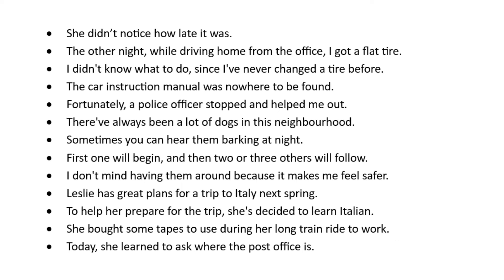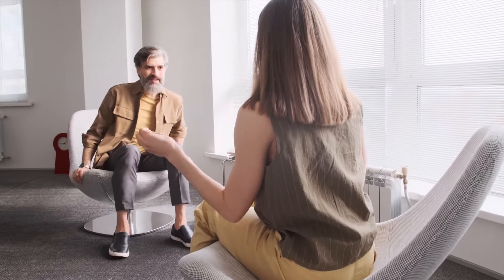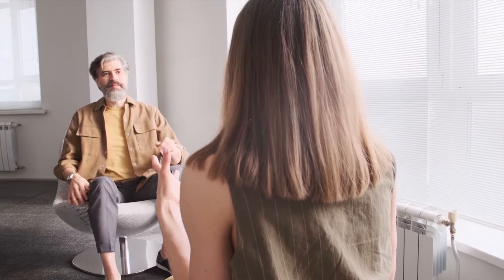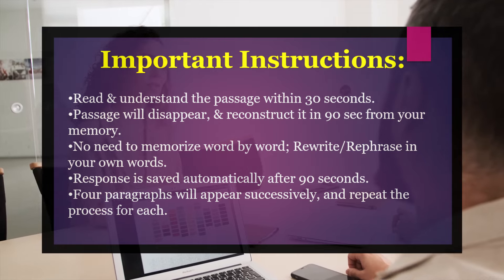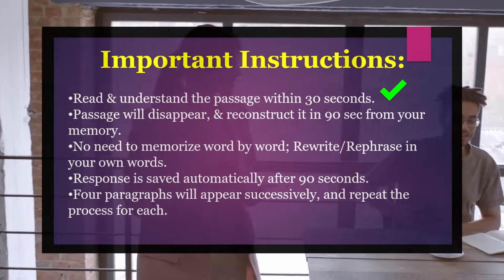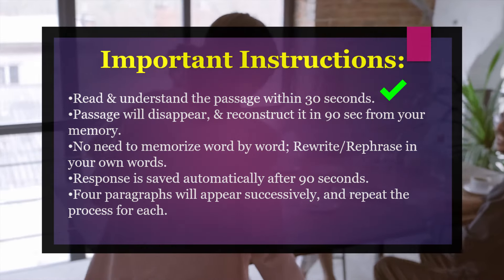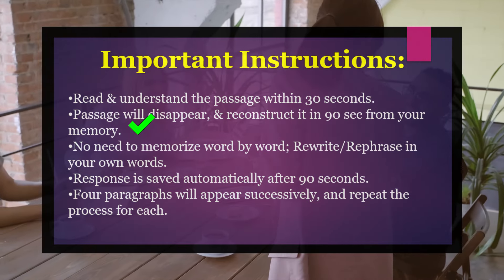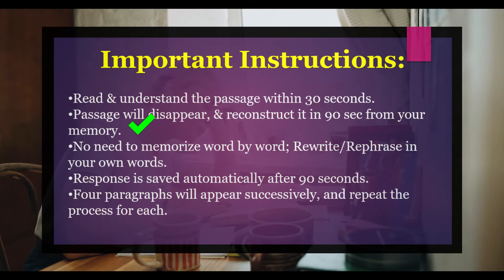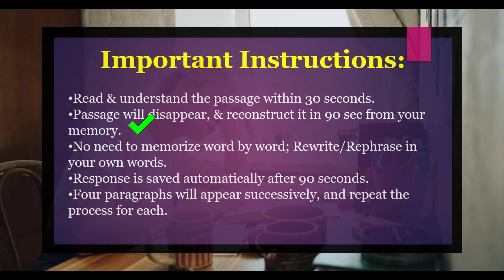Now let's move on to section 4. Both section 4 and section 5 are the sections that produce the highest scores in this test, so pay extra attention. Section 4: Passage Reconstruction. In this section, a passage will appear on your screen and you must read and understand its content within 30 seconds. After 30 seconds, the passage will disappear and a new screen will appear with a box. You will have 90 seconds to retype the entire passage from memory.